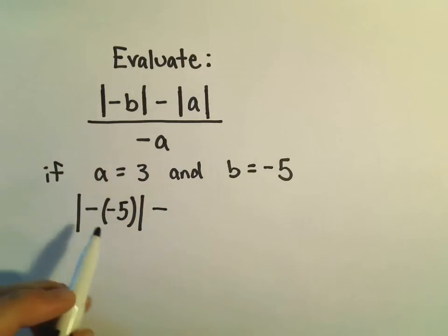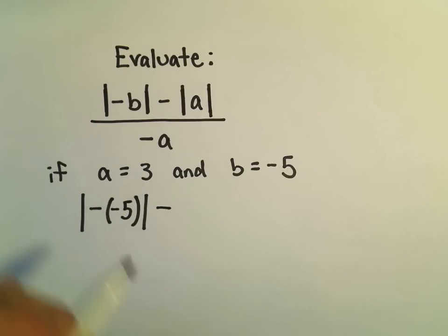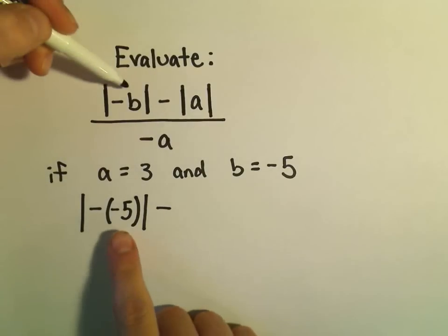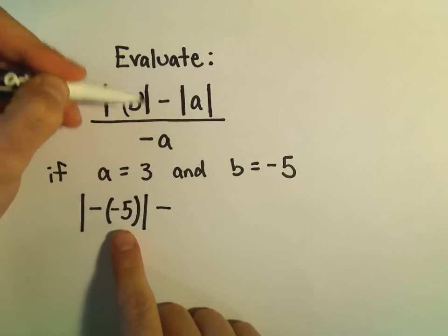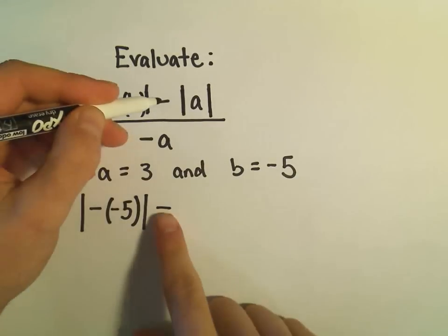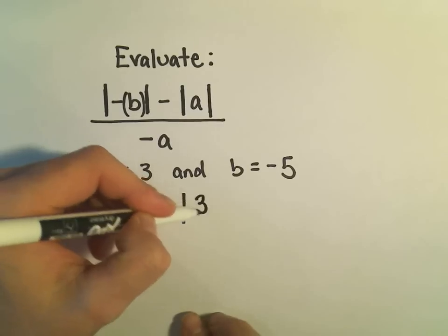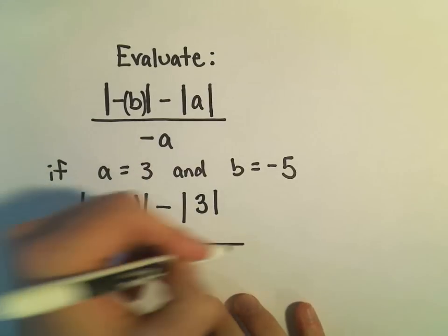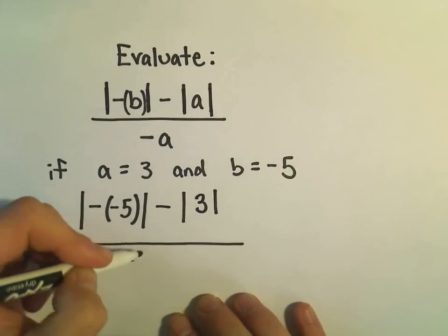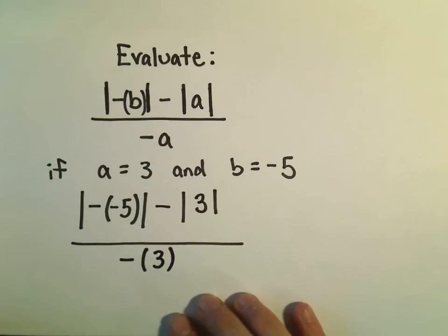So you'll see that as you go along. But just in general, I like to put things in parentheses. So I'm simply replacing my b with negative 5. There's our minus sign. We have the absolute value of a, which is simply positive 3. We're dividing all that by negative a, which is negative 3.